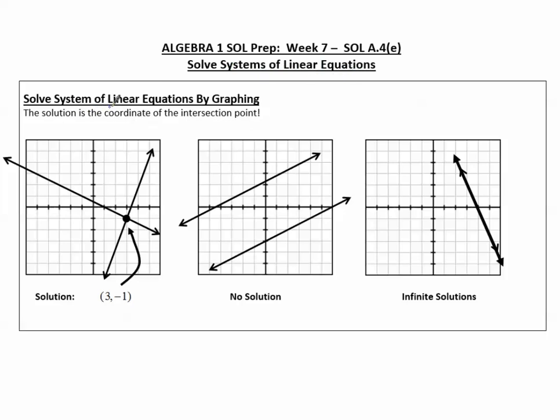To solve a system of linear equations by graphing, there are three things that could happen when we see a graph. The solution will be the coordinate of the intersection point if the two lines intersect or cross.